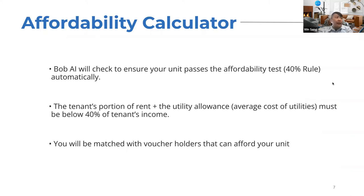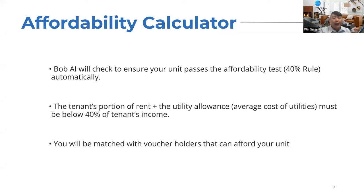Bob.ai checks that your unit passes the affordability test — the 40% rule — meaning the tenant's portion of rent plus utility allowance cannot exceed 40% of the tenant's income. Depending on whether you pay for water, sewer, and similar utilities, that utility allowance may increase. The goal is to make sure your unit is affordable for all renters matched to it.